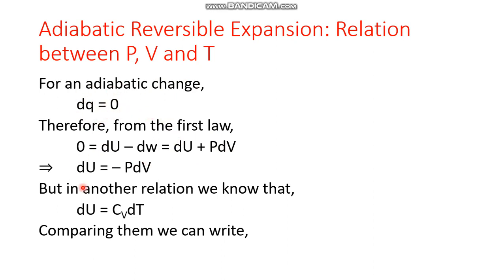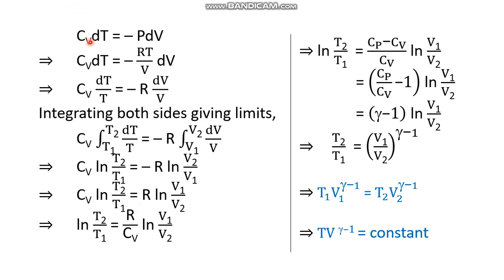What is the expression for du in this specific case where dq = 0? As a special case of the first law, du = −pdV. But we also know from another relation that du = cv·dT. Comparing both expressions, since the left-hand sides are equal, the right-hand sides must also be equal: cv·dT = −pdV. Now substituting the ideal gas equation p = RT/V for one mole, we get cv·dT = −(RT/V)·dV.